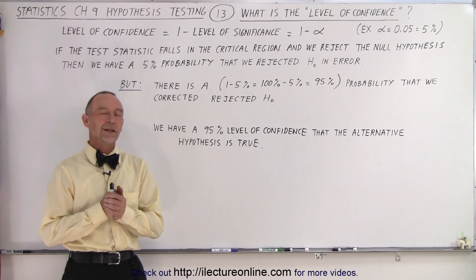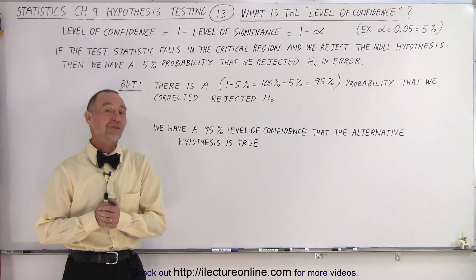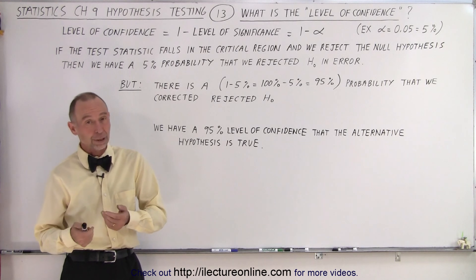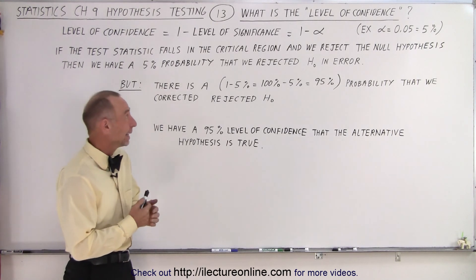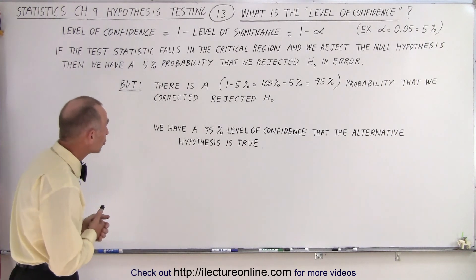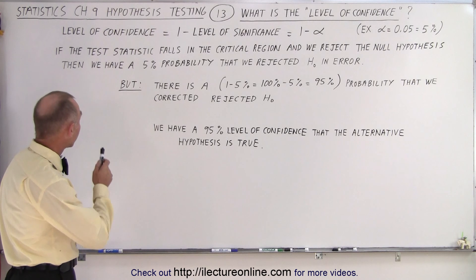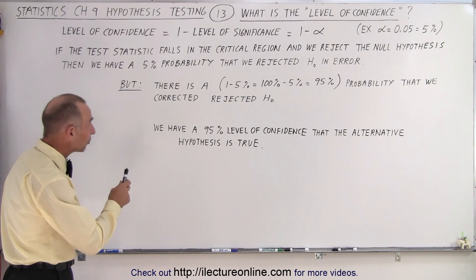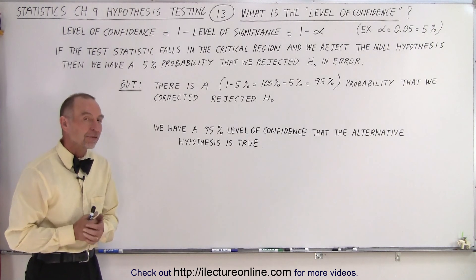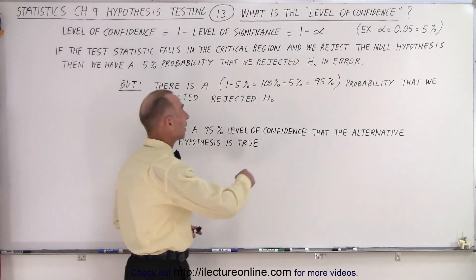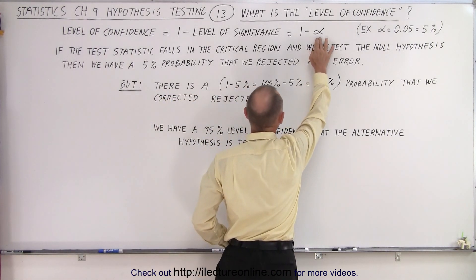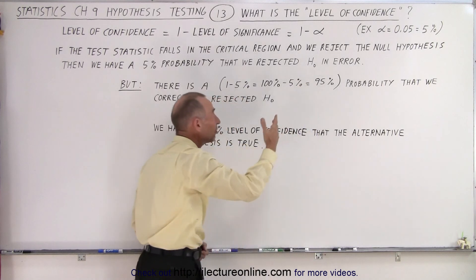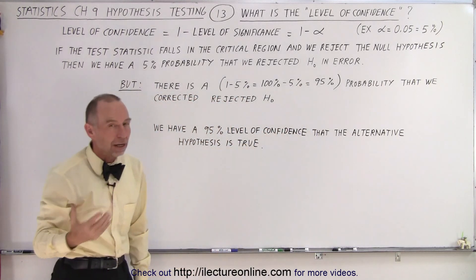Welcome to ElectronLine. Now let's talk about the level of confidence. That's a term that we haven't touched upon yet in this new chapter. The level of confidence is defined as 1 minus the level of significance. We used the letter alpha to indicate level of significance, so 1 minus alpha indicates the level of confidence.